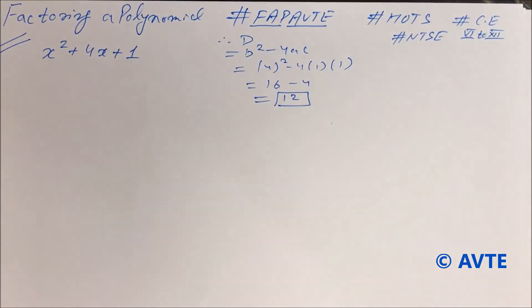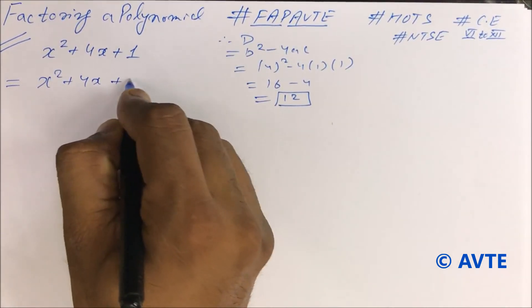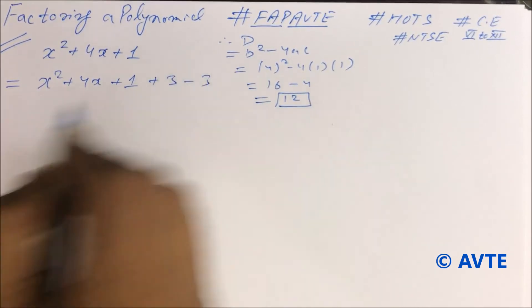It's an imperfect number, so your factors might not be integers. So what we do in this case, we add plus 3 and minus 3.